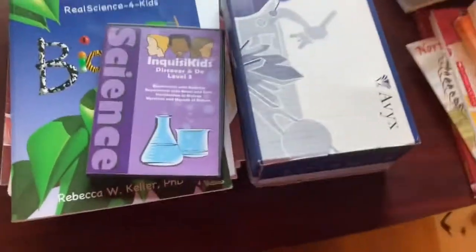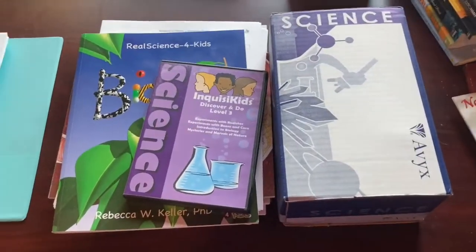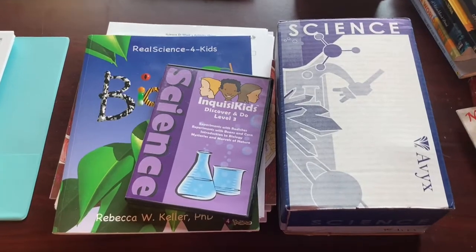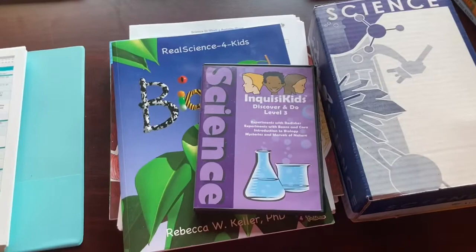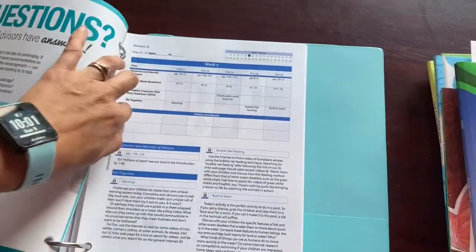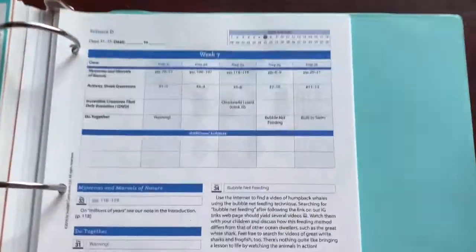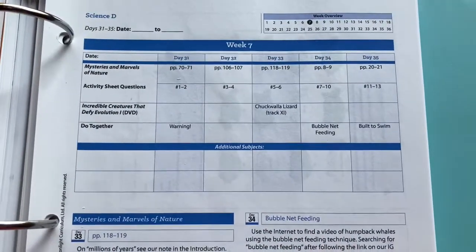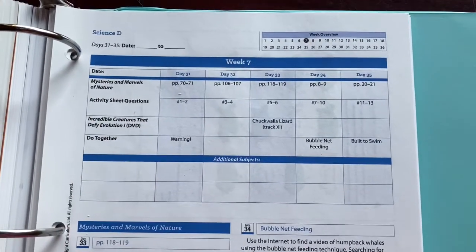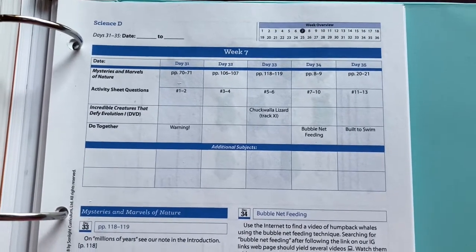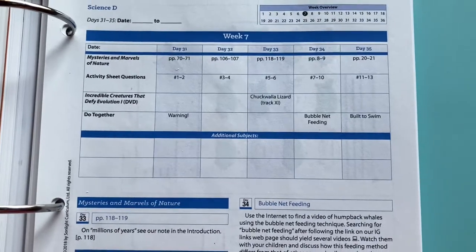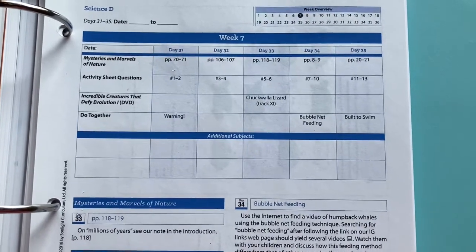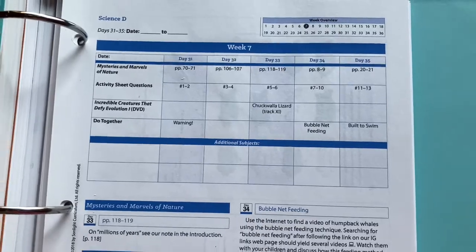For science, we are using Sunlight Science again this year. We have gone around to different things on our science and we keep coming back to this. He is doing Sunlight Science D on his own this year. There is a schedule the same way there is with the main part of Sunlight. Here's an example of the schedule. It tells him what book to read, which questions to answer. And then there's a DVD that we did not get with our kit, and that's okay because it's on Amazon Prime. This Incredible Creatures That Defy Evolution is on Amazon Prime, and our kids have already watched them several times.